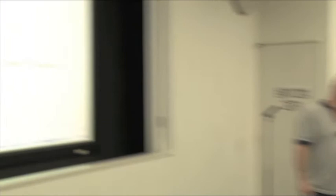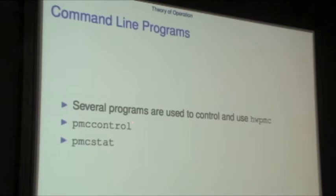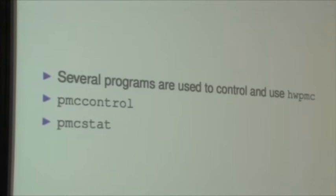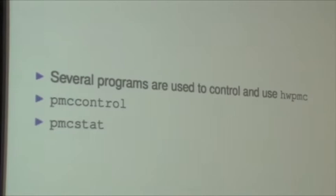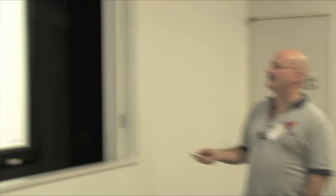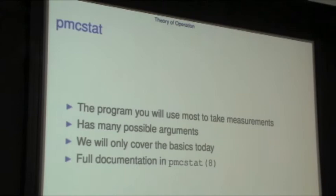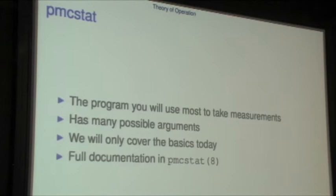There are only a couple of programs you'll use. PMC control you mostly use to find out if PMC is there and if it's working. PMC stat is what people use pretty much all the time for collecting data about the program that's running. The list of all supported events is the -lL flag — if you want to find out all the possible things you can count. PMC stat is what you use to measure the program: you run PMC stat and then give it a command line and it runs that program under the system. It has many possible arguments, and I would suggest reading the manual page.